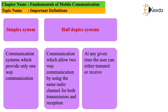Half-duplex system. Communication which allows two-way communication by using the same radio channel for both transmission and reception, but at any given time the user can either transmit or receive — not both simultaneously. The best example is walkie-talkie devices, in which you can either listen or send a voice signal.